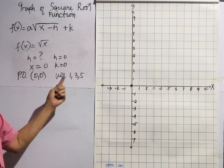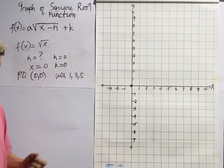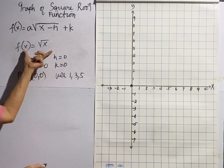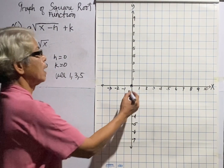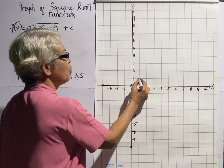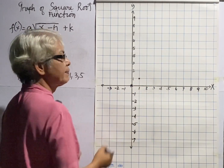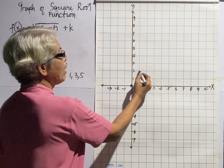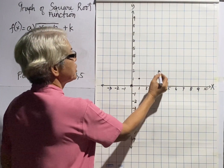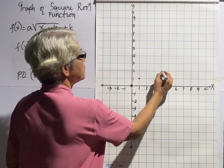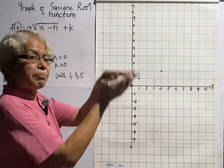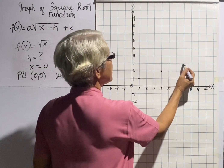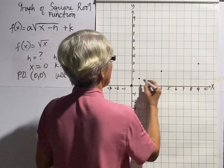Then use one-three-five to locate other points on the graph of the square root function. Go up one and run one, then go up one and count three — one, two, three — then go up another one unit and count five — one, two, three, four, five. That is the graph of this function.